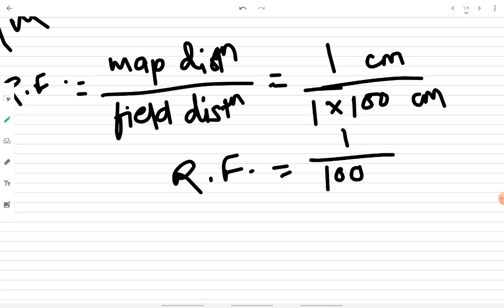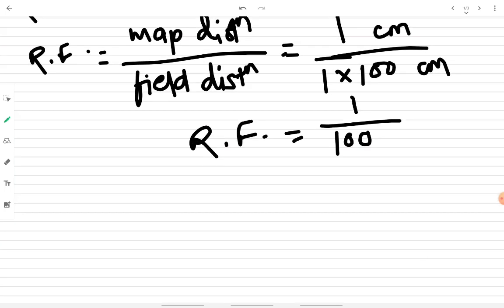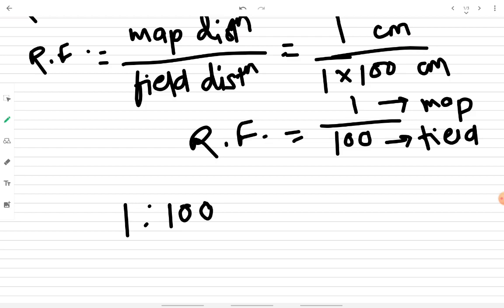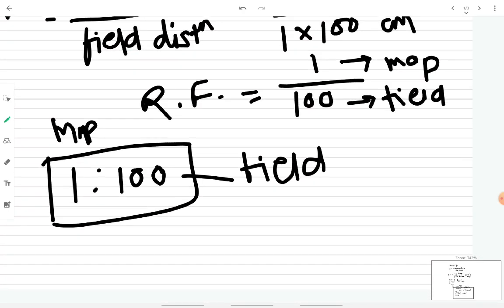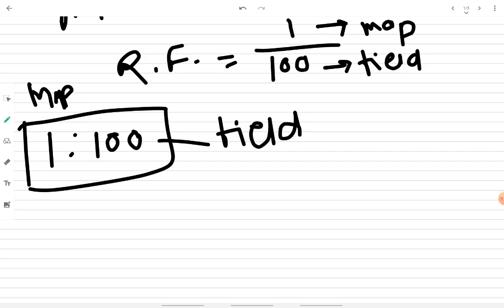See how easy it is to read the representative fraction when it is mentioned on a map. The numerator — one — means something measured on the map, and the denominator — one hundred — means the actual distance on the field. From this RF we can clearly see that the map is one hundred times scaled relative to the field data, meaning the ratio between map and field is 1 to 100.